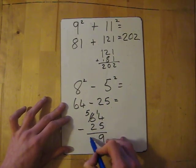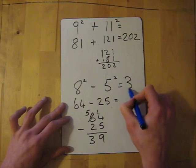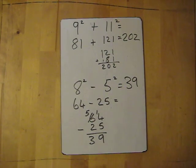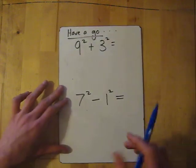So the answer is 39. Okay, now a couple for you to try yourself. We've got 9 squared plus 3 squared, and 7 squared take away 1 squared.